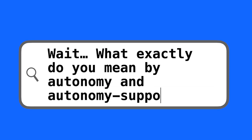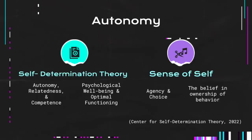What exactly do you mean by autonomy and autonomy supportive? For teachers, autonomy might conjure up images of a free for all or a very permissive classroom environment. But according to self-determination theory, autonomy, along with relatedness and competence, is a critical piece of psychological well-being and optimal functioning. It's having a sense of self derived through agency, choice, and the belief that one has ownership of their behavior. Autonomy supportive is a fancy way to mean teaching in a manner that fosters independence in students.